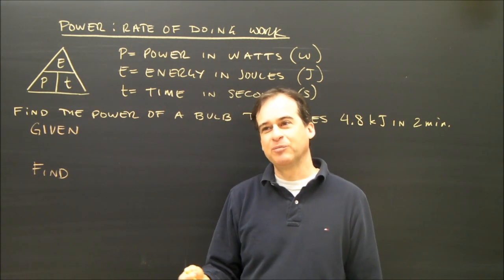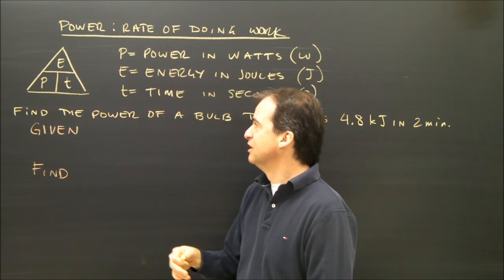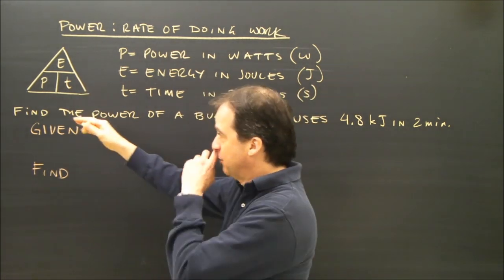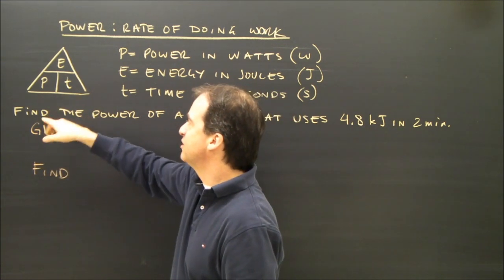If I had a 60 watt bulb, that means it's using less energy every second. So here's the formula and I put it in the shape of a triangle the way we did some of the other formulas, so it's easy to use.